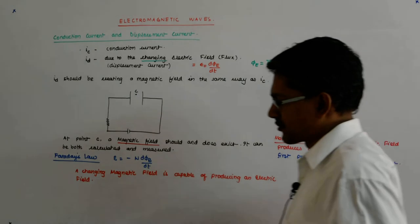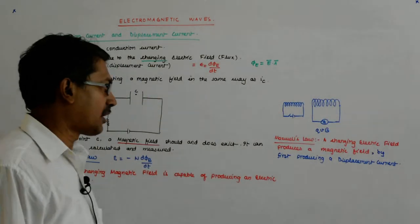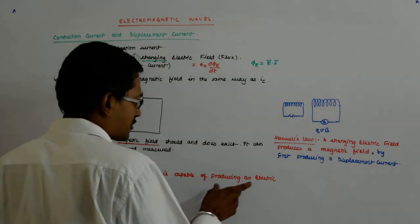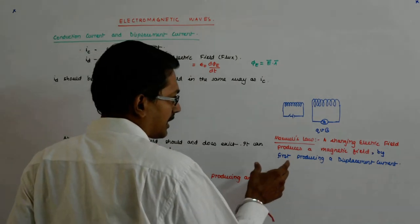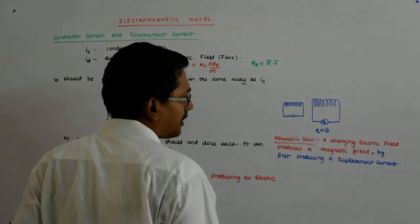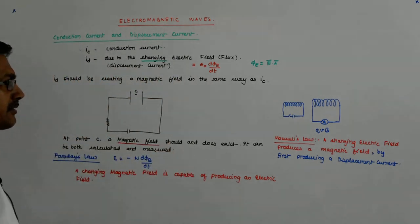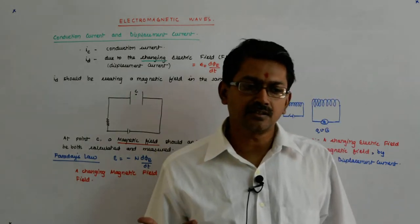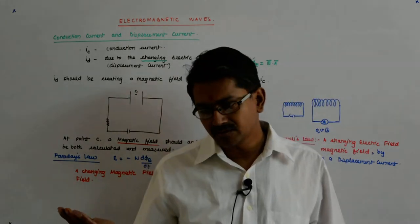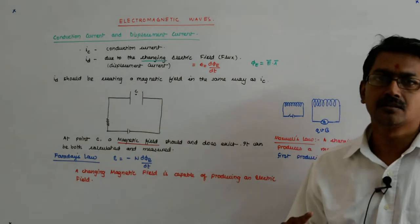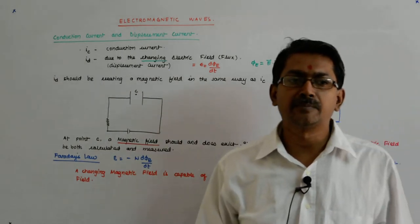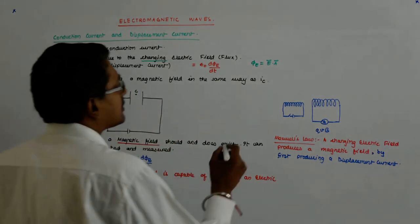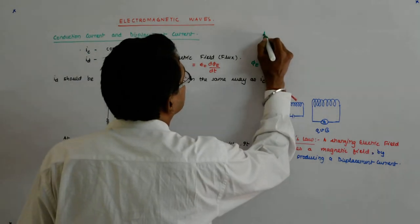So we saw that symmetry. In a sense, what happens now is if I change the electric field, it produces a current which produces a magnetic field. And if that current itself is changing, then it will produce a changing magnetic field which will produce an electric field back, a changing electric field.